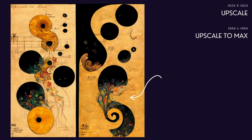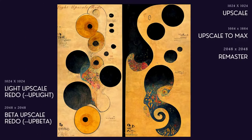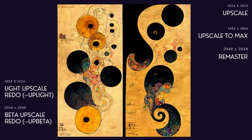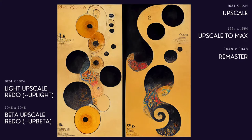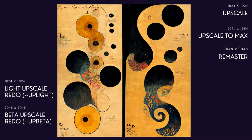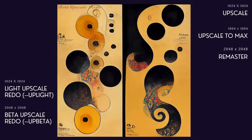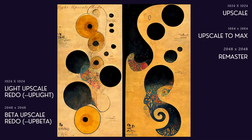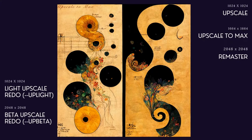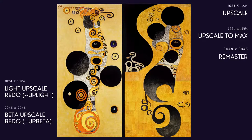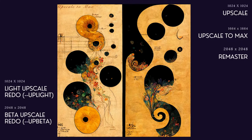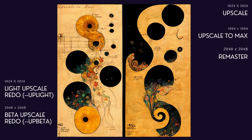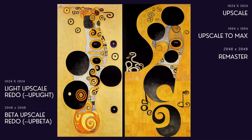The other upscale options also change details in your image. Light upscale redo upscales again but adds fewer details. You can jump directly to this option using the uplight switch. Beta upscale redo upscales again, uses a different algorithm, and creates a larger file size. You can jump directly to it using the up beta switch. Remaster is Midjourney's newest tool — this algorithm returns a very different look. It's not just the details that change, but the shapes and the look of your image. Beta and remaster return the largest file size at 2048 pixels square.